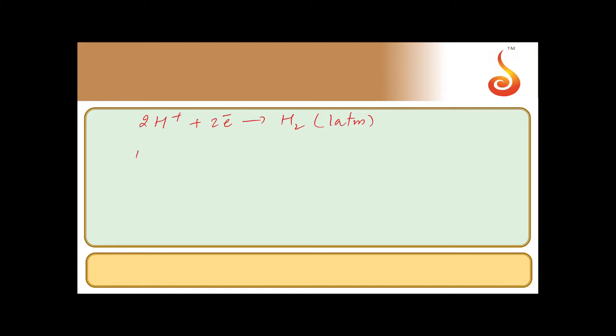Now let us apply Nernst equation for this: E is equal to E° minus 0.0591 by 2, because 2 electrons here, into log of 1 by H+ square.